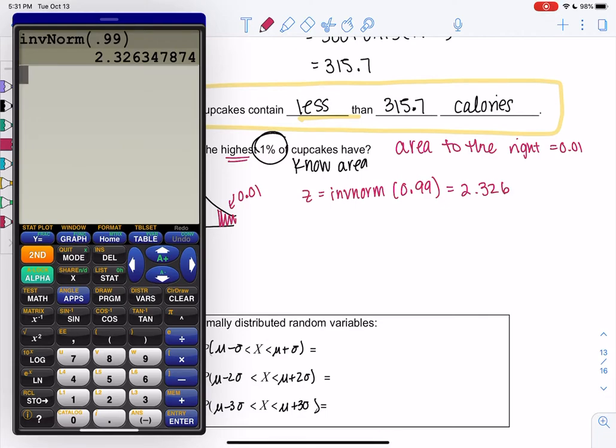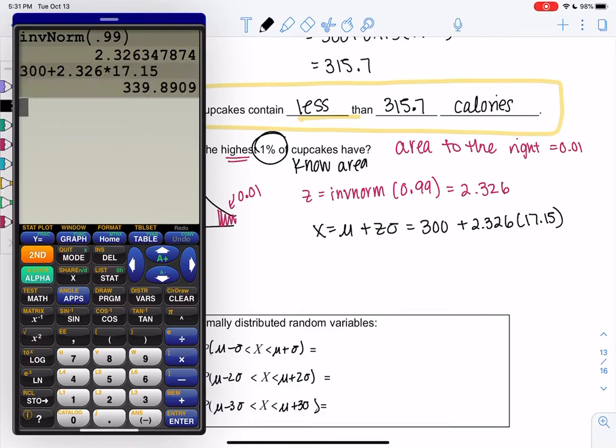This is z-score though, so we need to standardize it. So x is mu plus z-sigma. We're still looking at cupcake data, so that mean was 300 plus 2.326, and then standard deviation was 17.15. That'll be given to us for now. And I get 339.9 calories. So those are like the really decadent high calorie cupcakes.